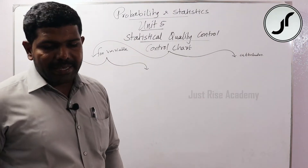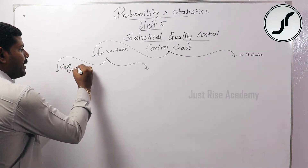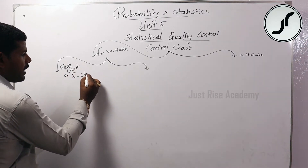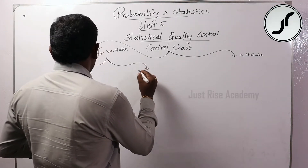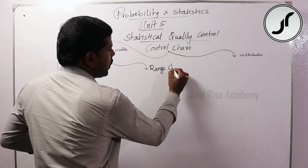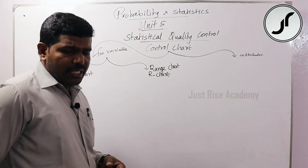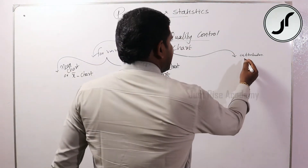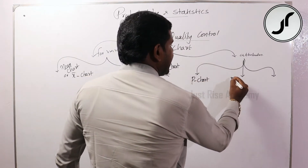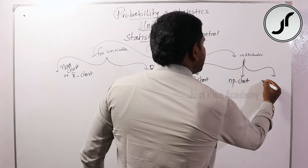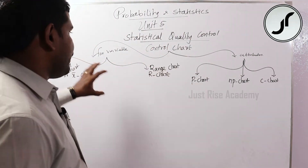For the variable control chart, we have two types: the mean chart, also called the X-bar chart, and the range chart, also called the R-chart. For attributes, we have three types of charts: P-chart, NP-chart, and C-chart.